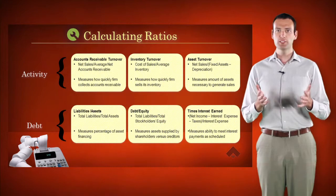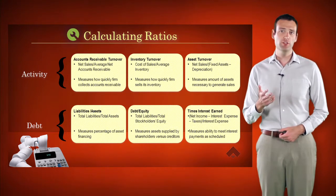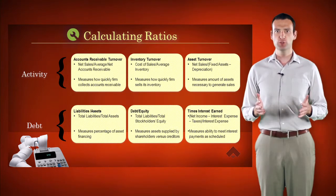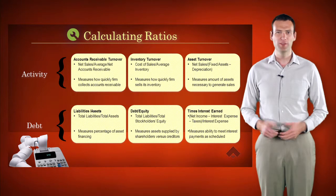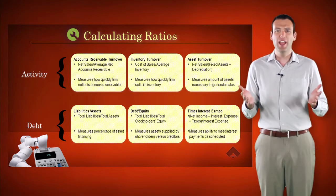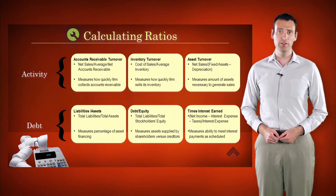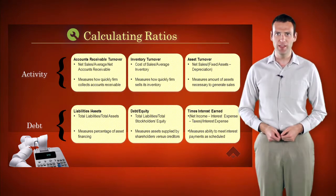Let's look more closely at these ratios. First, the activity ratios. Accounts receivable turnover is calculated by dividing net sales by average net accounts receivable. Why do we care about this number? We care because this number tells us something about the quality of sales and how quickly customers are paying.